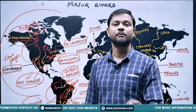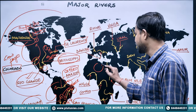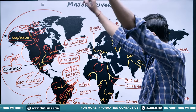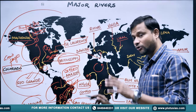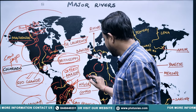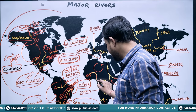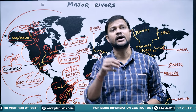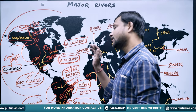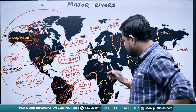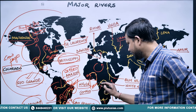Moving anti-clockwise to Africa, the Niger River originates on the western margin of Africa. It flows first northeast, then turns south, and drains into the Gulf region on the Atlantic side of Africa.